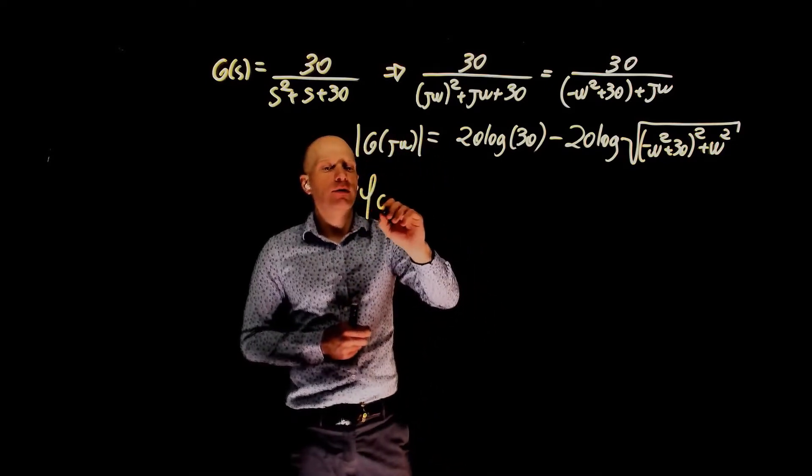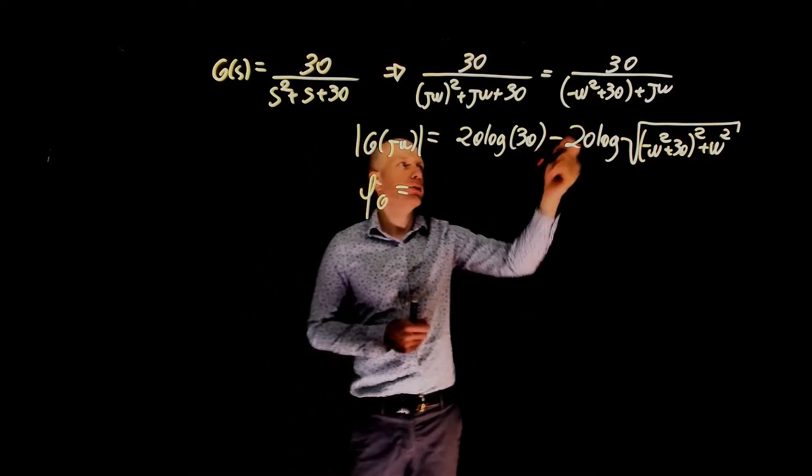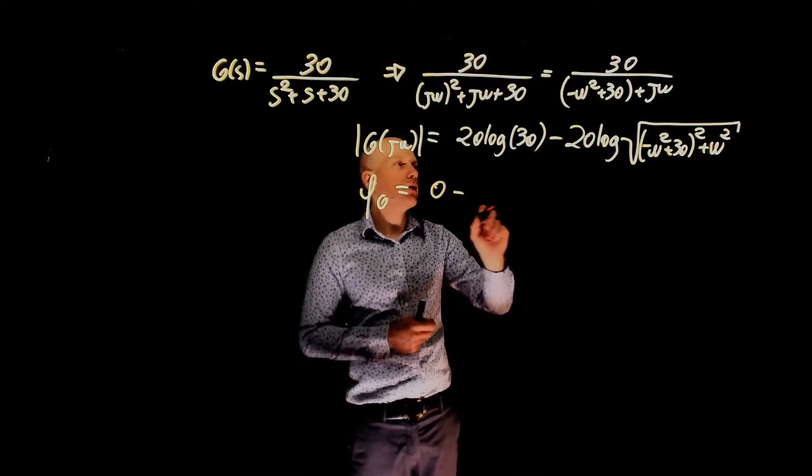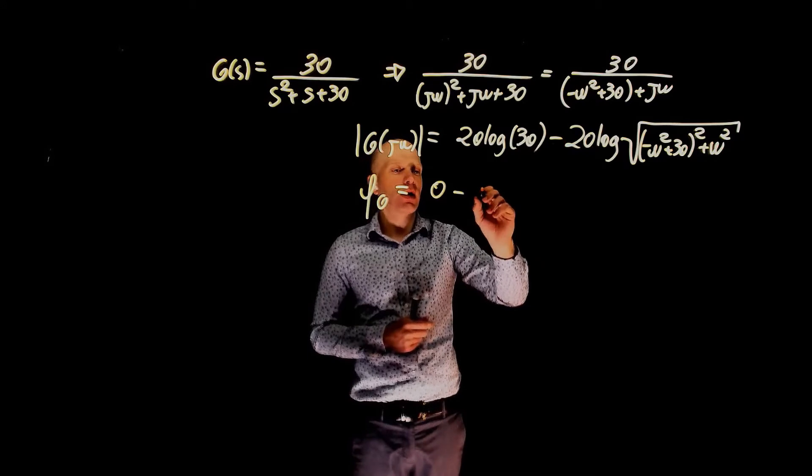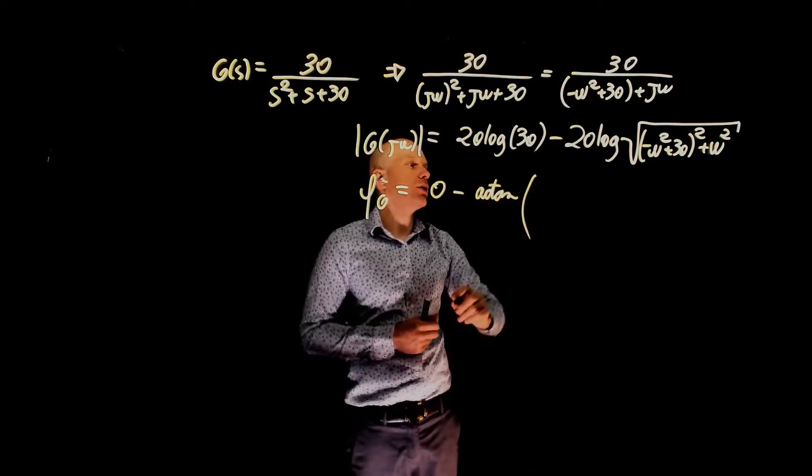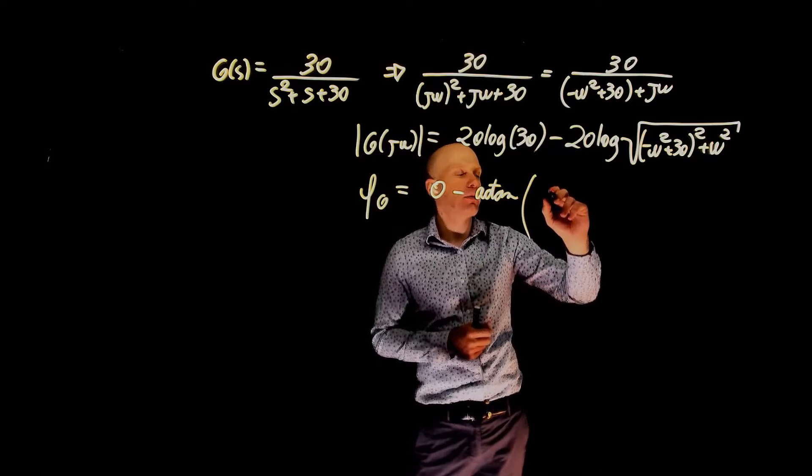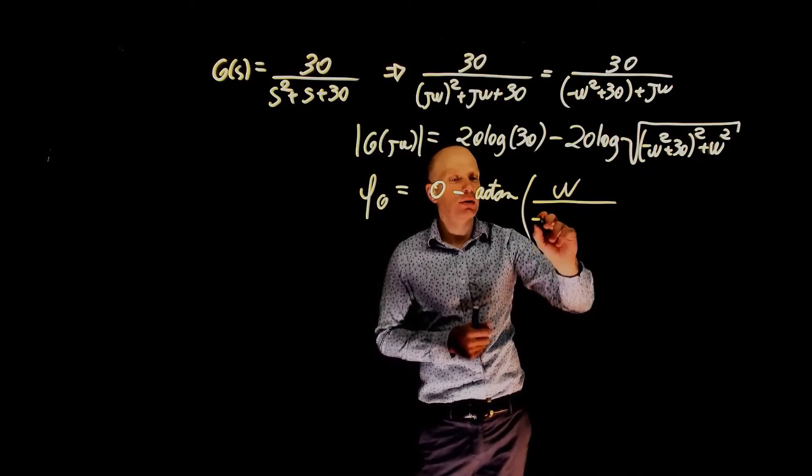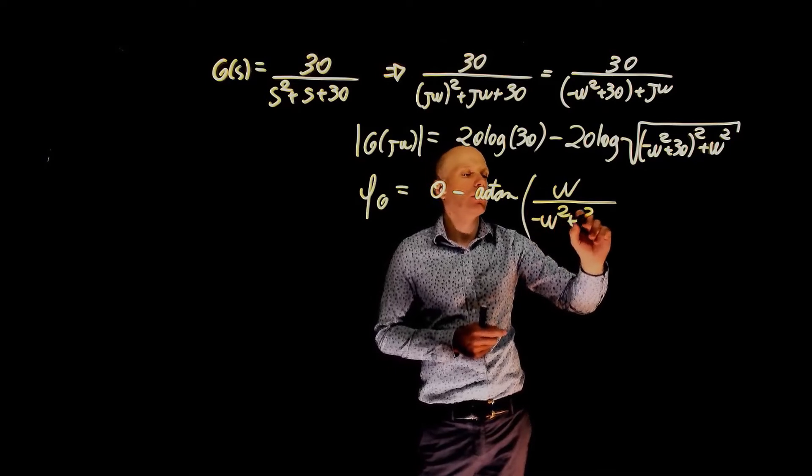And what is the phase of this function? The phase is zero for the numerator 30. The phase of the denominator is arctangent of the imaginary part, which is ω, divided by the real part, negative ω² plus 30.